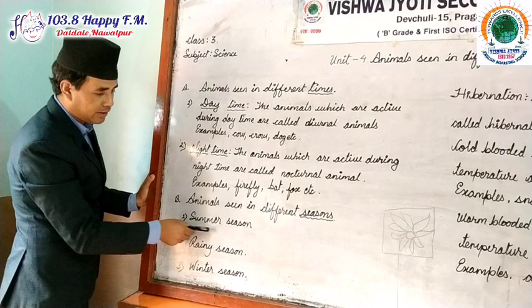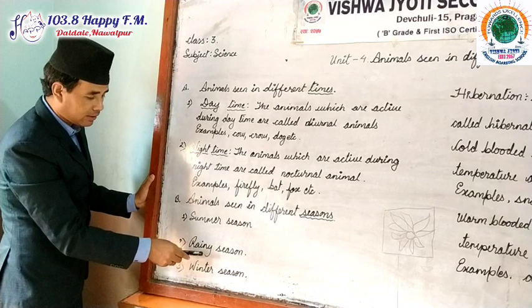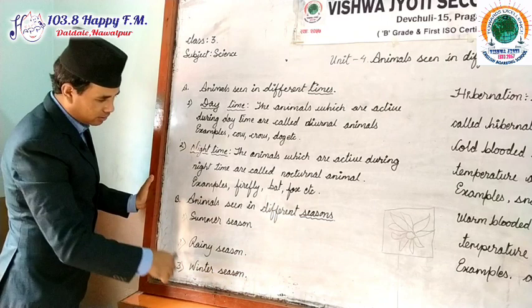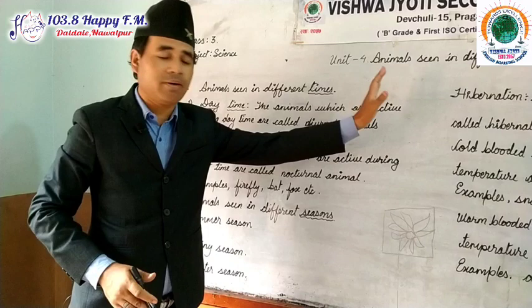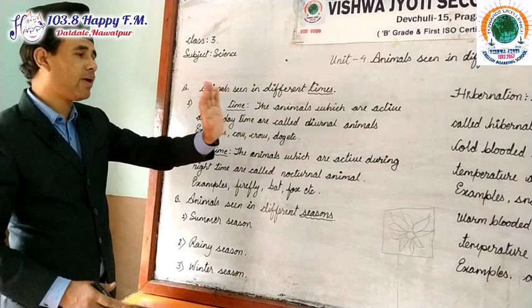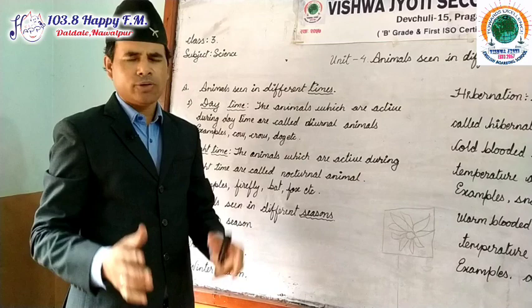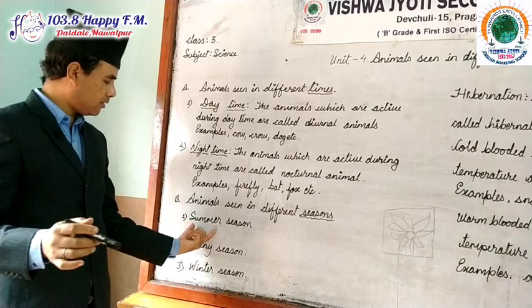Some common animals are seen only in the summer season, some only in the rainy season, and some only in the winter season. Observe the animals around your surroundings during the summer season.